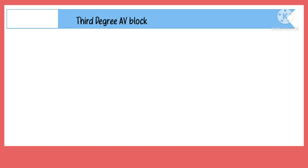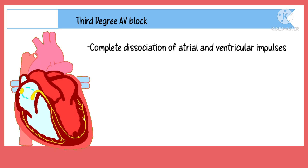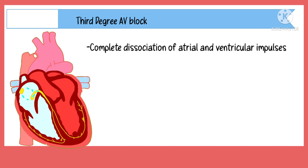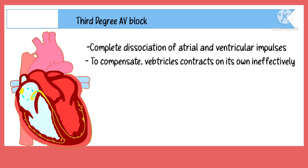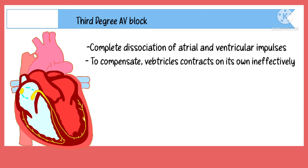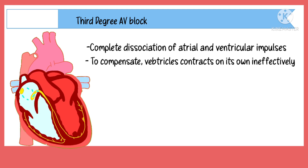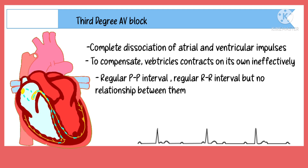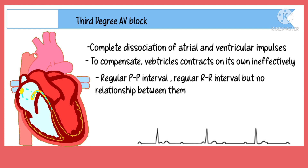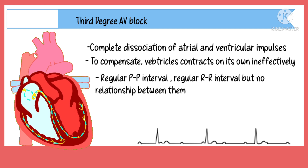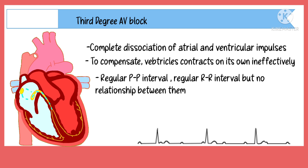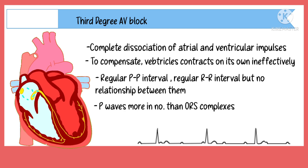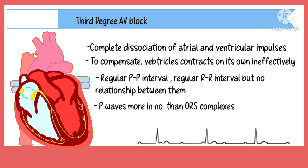In 3rd degree heart block, there is a complete dissociation of the atrial and ventricular impulses. Thus, the ventricles, to compensate for the absence of impulses, start to beat on their own in an ineffective manner. In 3rd degree AV block, there is a regular PP interval and regular RR interval, but there is no relationship between the P waves and the QRS complexes. The P waves are also more in number than the QRS complexes.